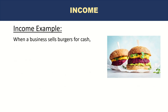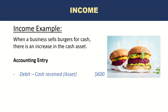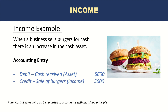As an example of income: when a business sells burgers for cash, there is an increase in the cash asset. The accounting entry is debit cash received and credit sale of burgers — this is the income or revenue. There is always a double entry dual impact, so the asset increases and income also increases in the form of a credit. Note that cost of sales will also be recorded in accordance with the matching principle.